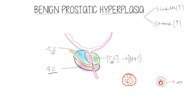This is the whole scenario in benign prostatic hyperplasia: enlargement of the transition zone causes compression of the urethral lumen, causing obstruction to the flow of urine. The urine which was freely flowing can no longer do so, leading to urinary retention in the urinary bladder.